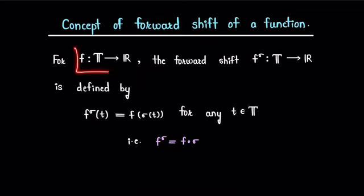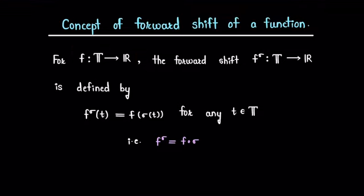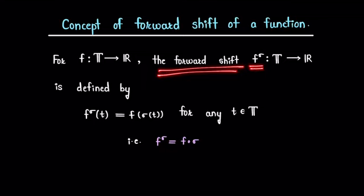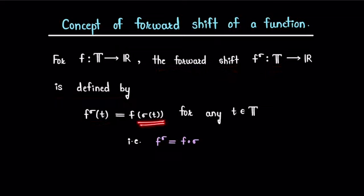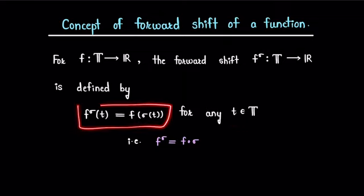Let f be the function defined from timescale T to R. Then the forward shift of a function, denoted by f^σ, is a function from timescale T to R which is defined by f^σ(t) = f evaluated at σ(t) for any element t in timescale T. Thus, f^σ is the composition of f with the forward jump operator σ.